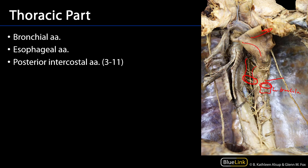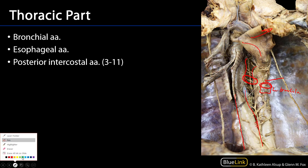The pericardial arteries tend to be quite small and difficult to see; since the pericardium has been removed here, very frequently those can be torn. But we can see a couple of esophageal arteries through the esophageal plexus there, which tend to be somewhat irregularly dispersed throughout the length of the esophagus.